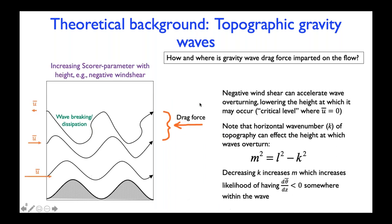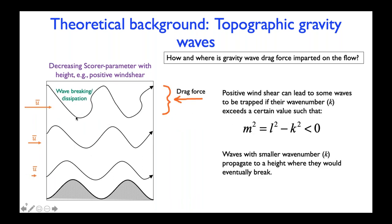When static stability varies with height or there's negative wind shear, the score parameter increases with height. This can cause waves to overturn and break at a lower height, roughly at the critical layer where the zonal wind becomes zero. Also, the horizontal wave number of the topography can affect the height at which waves break. Decreasing K increases the vertical wave number, which increases the likelihood of static instability — so waves may break lower with broader mountains. If there's positive wind shear, the score parameter decreases with height and there could be a level where the vertical wave number becomes imaginary for waves with a given horizontal wave number K, trapping those waves. Orographic gravity wave drag parameterizations have a lot of work to do to sort through all these possibilities.